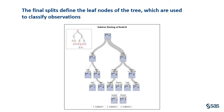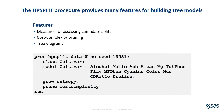Now let's run the HP split procedure on the complete data with 13 predictors. Here is the tree diagram produced by the procedure. The diagram shows all the splits, starting with the root node at the top. The tree has eight leaf nodes, and for each leaf node there is a split rule which assigns the samples in that node to one of the cultivars. The HP split procedure provides many features for specifying how tree models are to be built and for creating tree diagrams.